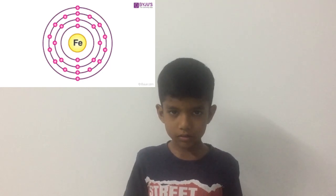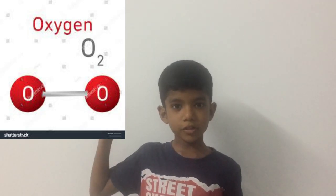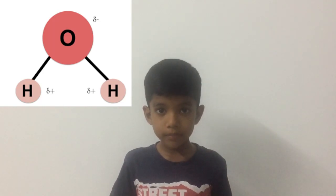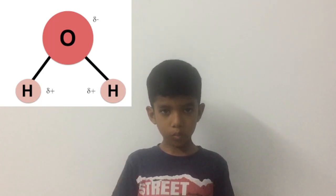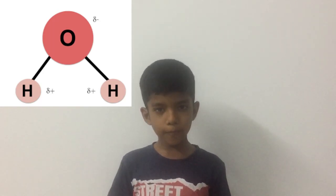Let's see the molecules. When two hydrogen atoms get together, one hydrogen molecule forms. Similarly, when two oxygen atoms get together, an oxygen molecule forms. See this complex structure of the iron molecule. Do you know what the formula of a water molecule is? It is one oxygen atom and two hydrogen atoms. When they multiply, a water drop forms.